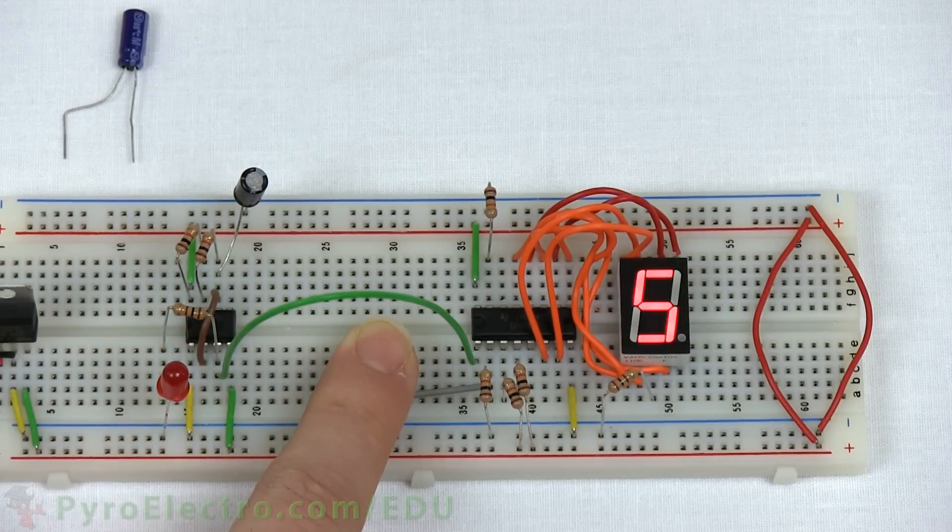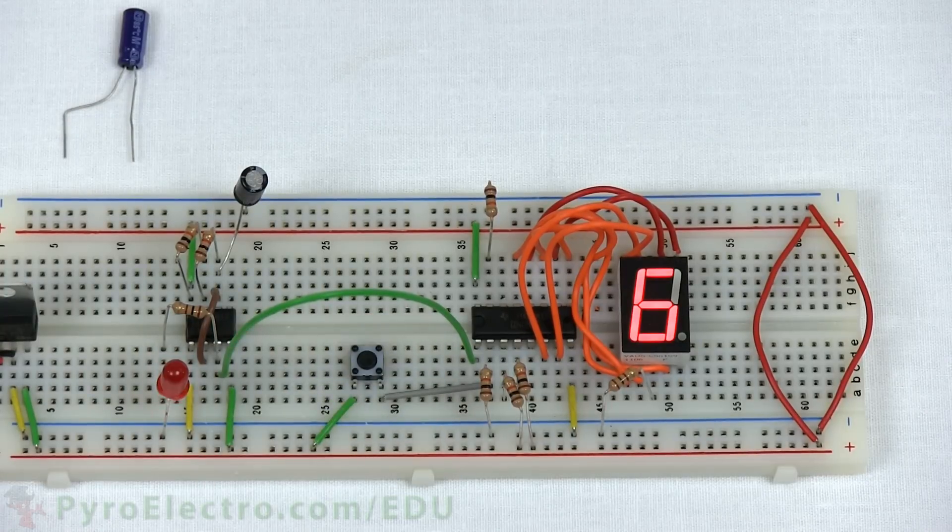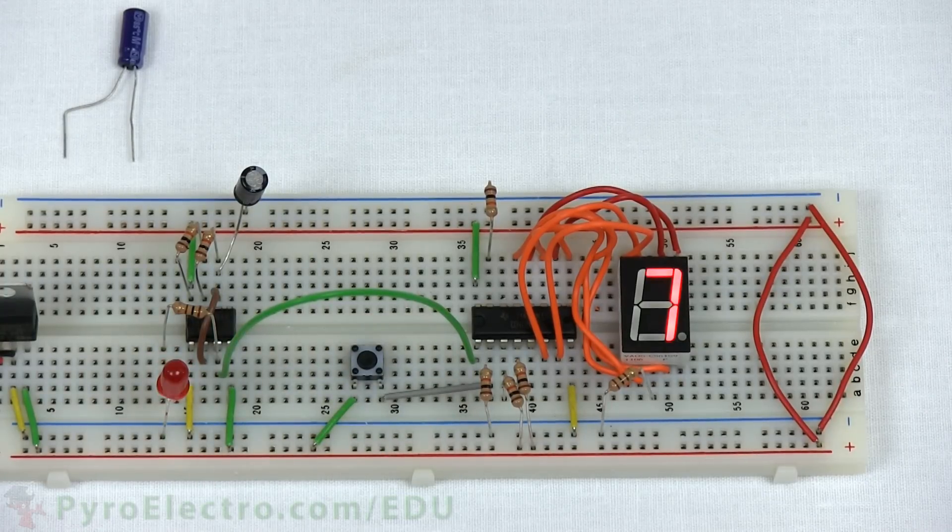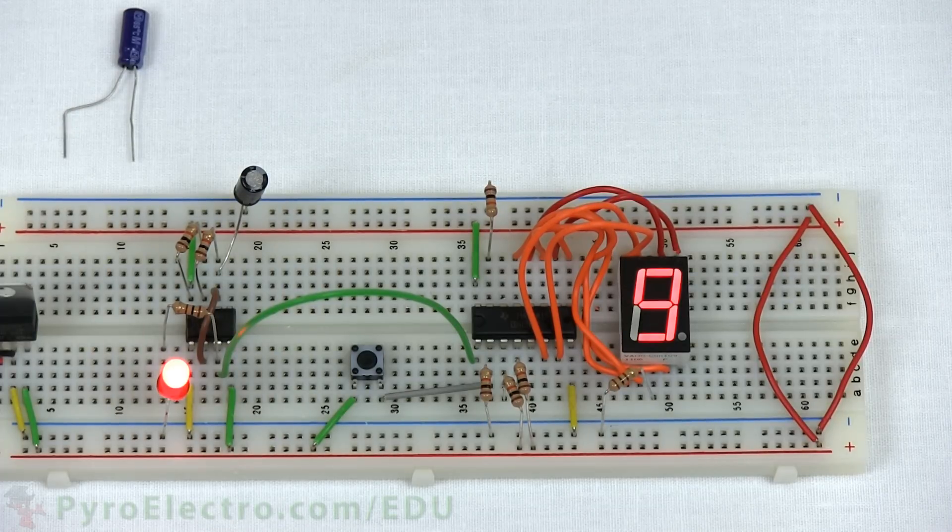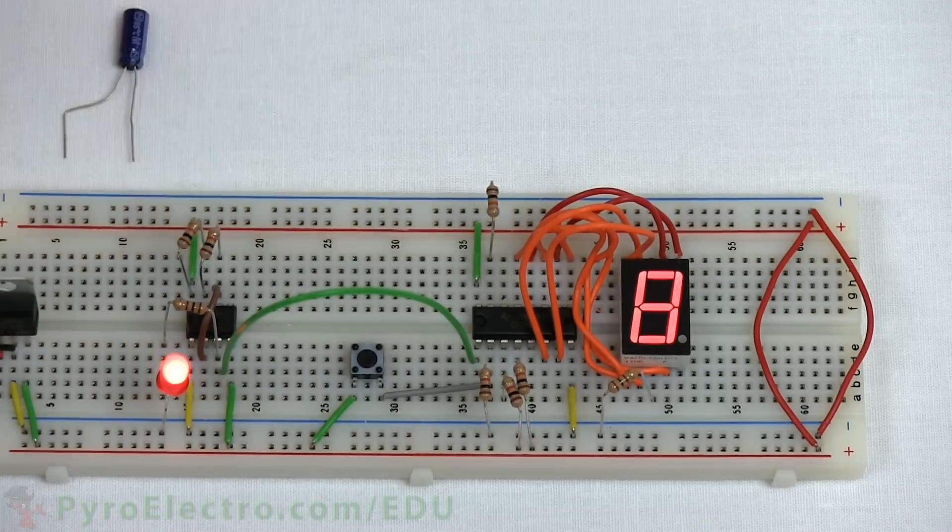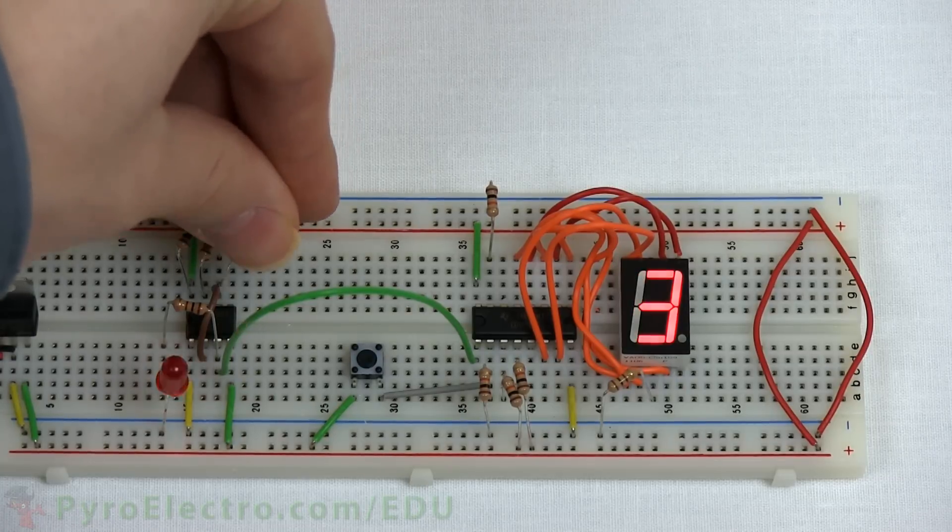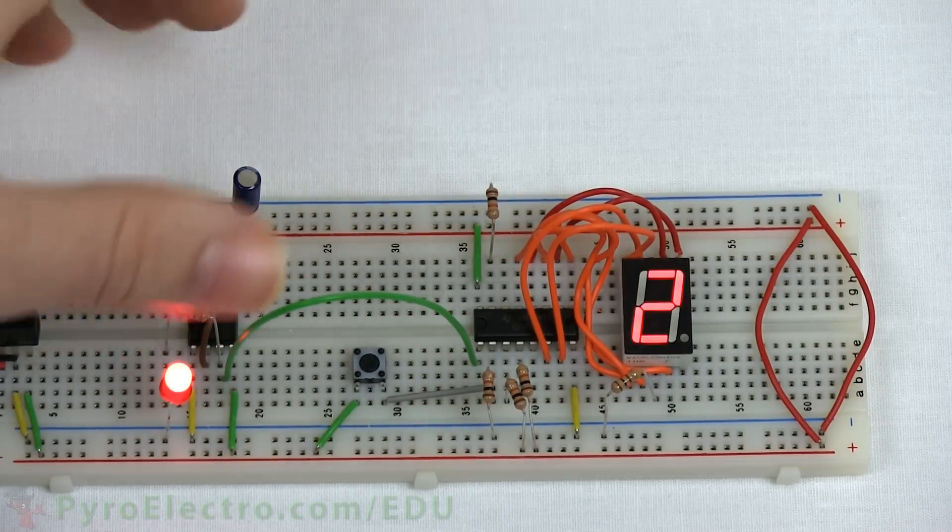You'll notice when the counter reaches the count value of 9, it restarts over at 0 and counts up again. If we swap out the 100 microfarad capacitor with a 10 microfarad capacitor, the system starts to count a lot faster since the clock signal from the 555 timer is now going faster.